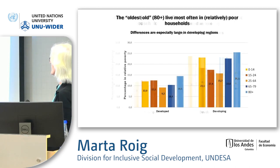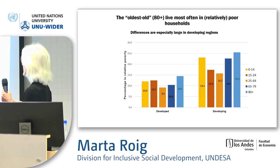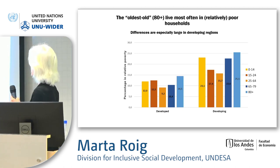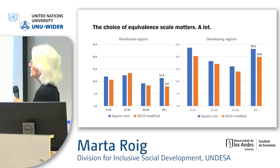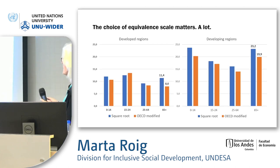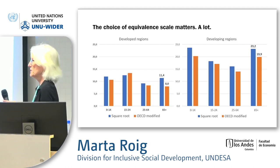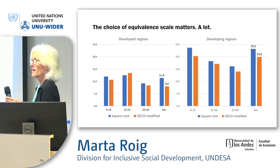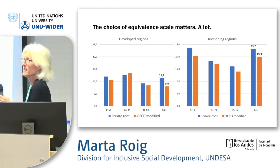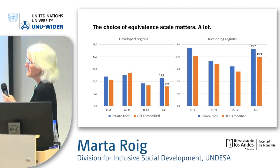As to who is in poverty: first, by age, it is the oldest old — the population aged 80 or older. They are poorer than any other age group, both in rich and poor countries. Regarding equivalence scales: the square root scale, which we use in our report, adjusts for household size. The blue bars show estimates using the square root equivalence scale. If we use a different equivalence scale — the one used by OECD until recently, giving a value of 1 to the first adult, 0.5 to other adults, and 0.3 to children — the estimates obtained are very different, so we have to be aware of that.